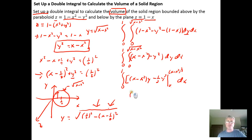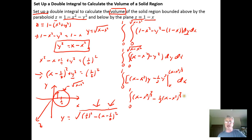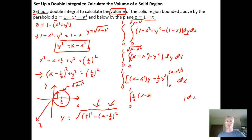Plugging in gives: (x minus x squared) to the first times (x minus x squared) to the one-half, minus (1/3) times (x minus x squared) to the one-half cubed. That's (x minus x squared) to the 3/2 minus (1/3)(x minus x squared) to the 3/2, which equals (2/3)(x minus x squared) to the 3/2 dx. So we factor out the 2/3 as a constant, giving (2/3) times the integral from 0 to 1 of (x minus x squared) to the 3/2 dx.